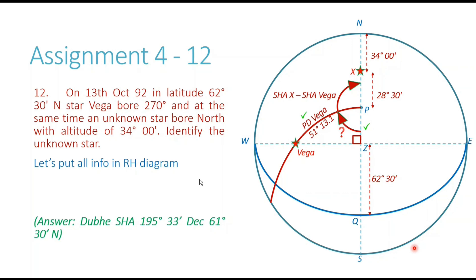I have solved the answer. Both stars are observed at the same time, so they share the same GHA. I found angle P, which equals the LHA of Vega, and noted that the LHA of the unknown star is 180 degrees since it is on the inferior meridian.